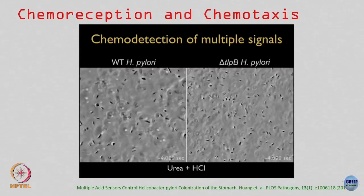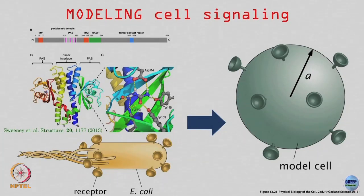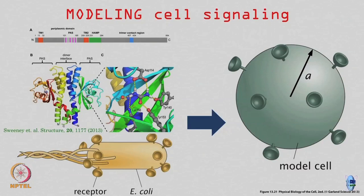We saw the H. pylori movies where it moved either towards urea or away from HCl. The cell has certain chemoreceptors on its surface — proteins that can detect and recognize a chemical. What I want to know is: if I have some chemical source far away, at what rate is the cell going to detect these chemicals with the help of these chemoreceptors?